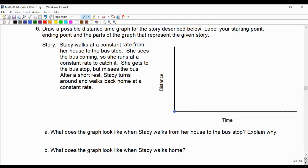All right, so we're going to start off. It says Stacy walks at a constant rate from her house to the bus stop. So we're going to draw a line. It's not going to be very steep because steepness means that the speed is quite fast.